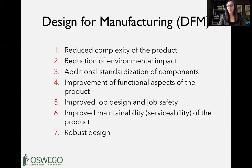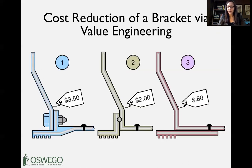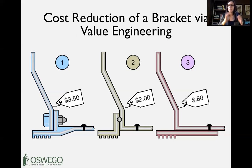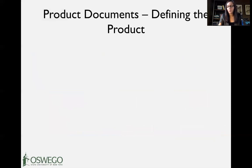If you watch Shark Tank, these are the kinds of questions that come up: what materials are you using, what's your production process, what's the value analysis of how you're creating your products? A simple example in the text shows brackets that can be made in different ways. The first approach has many components and costs $3.50. Different methods with fewer components bring it down to $2, and more innovative approaches can create a durable product at an even lower price point, depending on complexity and materials.